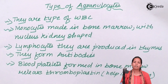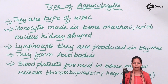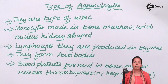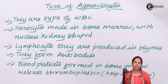If we talk about agranulocytes, they do not contain granules in their cytoplasm. The three different kinds of agranulocytes are monocytes, lymphocytes, and blood platelets, which are commonly visible in human blood.